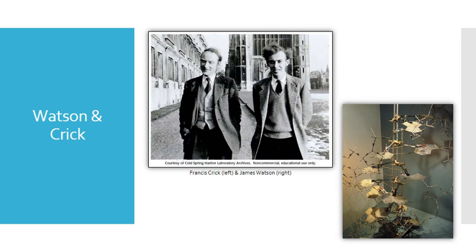Ultimately, it was James Watson and Francis Crick who proposed a 3D model of DNA in 1953. Their original model was inside-out, but eventually they proposed the model we know today. Rosalind Franklin's X-ray diffraction images were key to getting the model right, and Maurice Wilkins also contributed images. In 1962, the Nobel Prize for Physiology or Medicine was awarded to Francis Crick, James Watson, and Maurice Wilkins. Because the Nobel Prize is not awarded posthumously, Rosalind Franklin — who had died in 1958 — was not listed among the winners, though her contribution is more widely recognized today. Notably, in 1953, Franklin and Wilkins published papers in the same issue of Nature where Watson and Crick first published their findings.